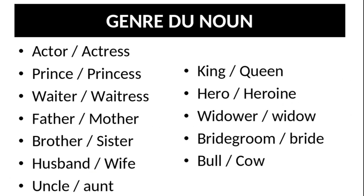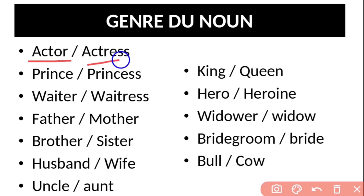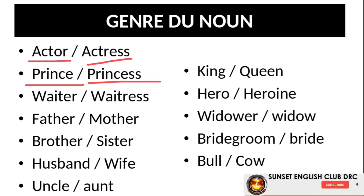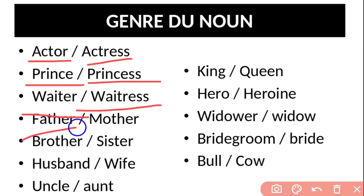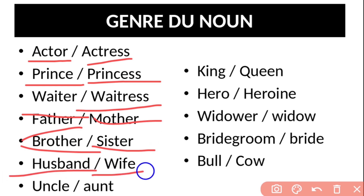Voici des exemples de paires masculin/féminin en anglais : actor (un acteur) / actress (une actrice) ; prince (un prince) / princess (une princesse) ; waiter (un serveur) / waitress (une serveuse) ; father (papa) / mother (maman) ; brother (frère) / sister (sœur) ; husband (mari) / wife (femme) ; uncle (oncle) / aunt (tante).